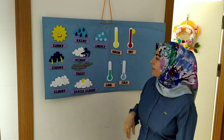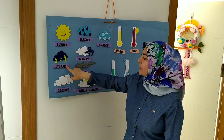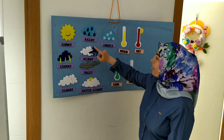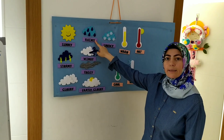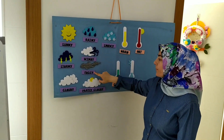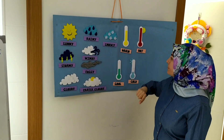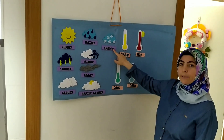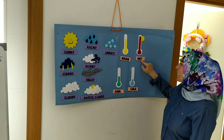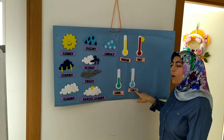Let's repeat again one more time. Sunny. Stormy. Cloudy. Rainy. Windy. Foggy. Partly cloudy. Snowy. Warm. Hot. Cool. Cold.